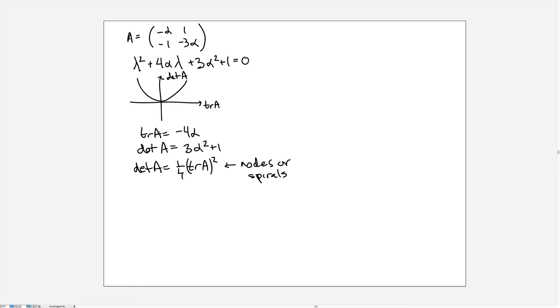So let's actually draw the curve for this set of alpha values. And what does that mean? That means I want to solve for alpha and I'll get trace of A over minus 4. And now that tells me that the determinant of A written as a function of trace of A will be 3 times this quantity trace of A over 4 minus 4 all squared plus 1. So there I get 3 over 16 trace of A all squared plus 1.